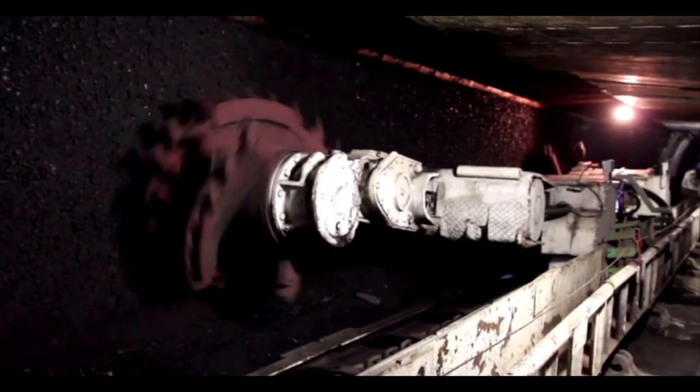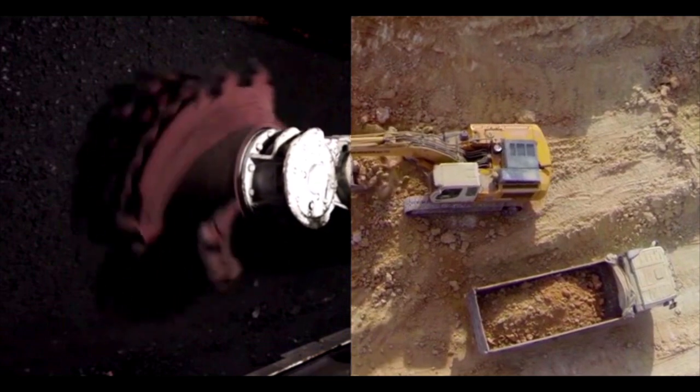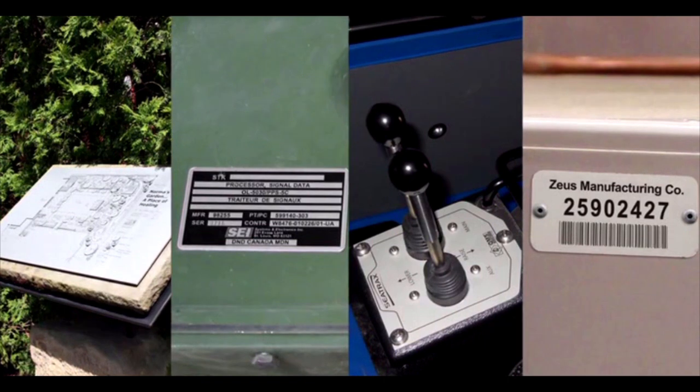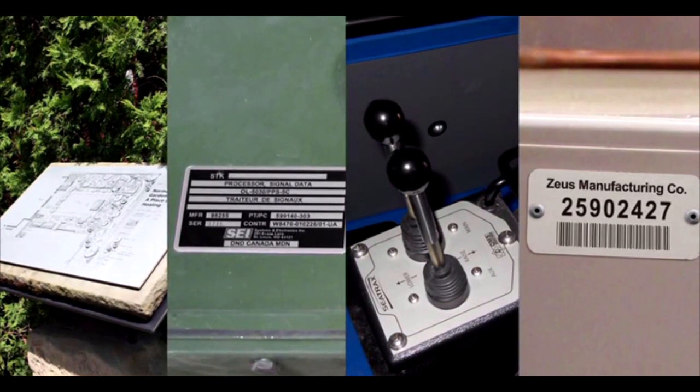MetalPhoto is used when permanent identification of a product, process, or asset is critical. That is, when a nameplate, label, sign, or machine control panel must last the life of the part to which it is affixed.